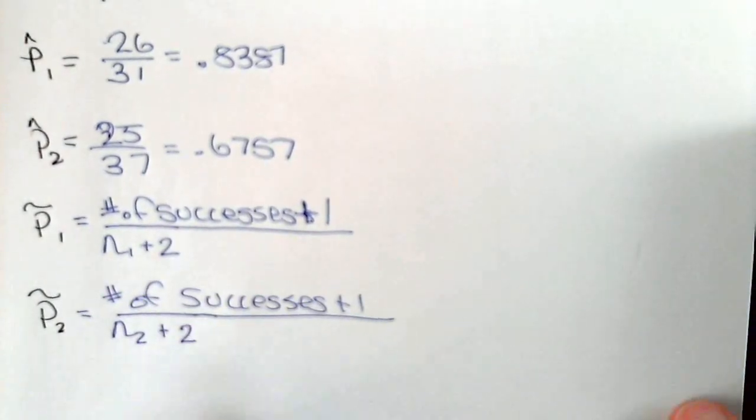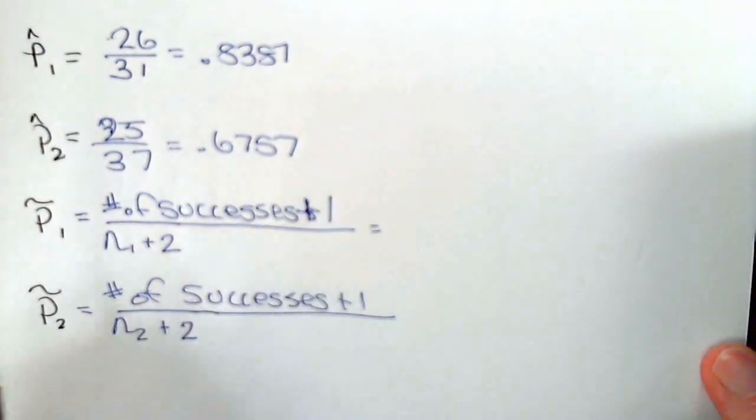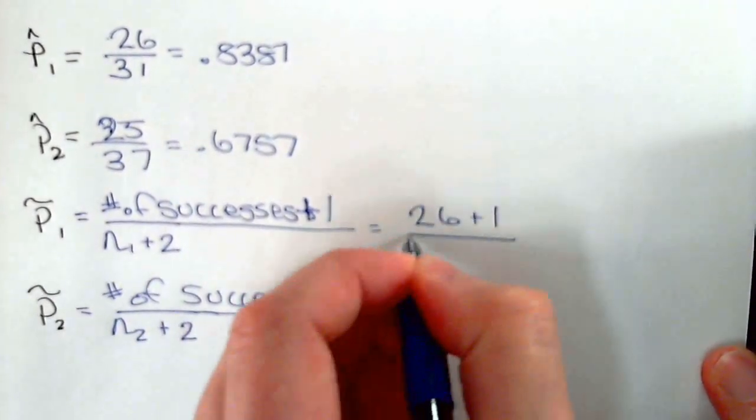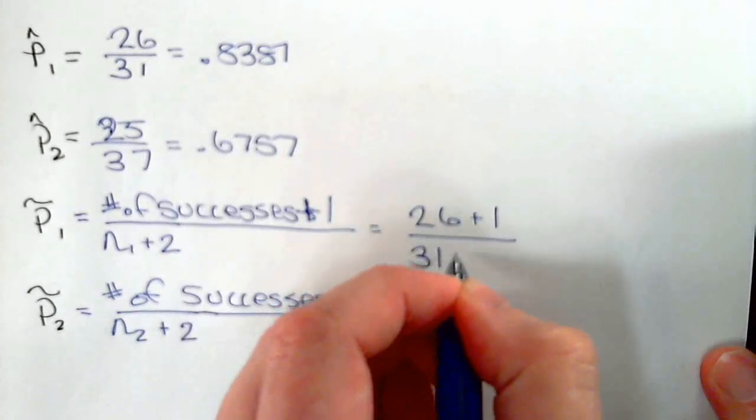So our plus 4 for the first sample is going to be 26 plus 1 over 31 plus 2.